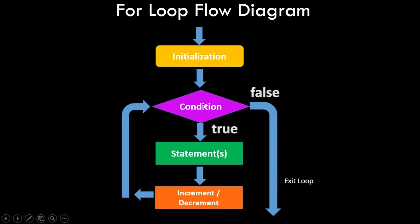Again the condition is checked — if the condition is true, the statements are executed again. The increment or decrement happens, and this repeats n number of times as long as the condition is true. Once the condition is false, the program exits from the for loop. This was just a visual representation of the for loop.